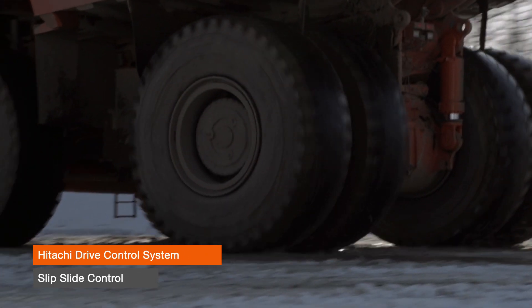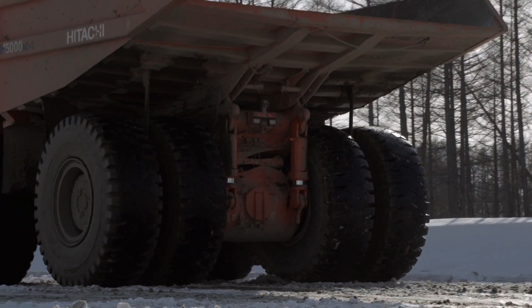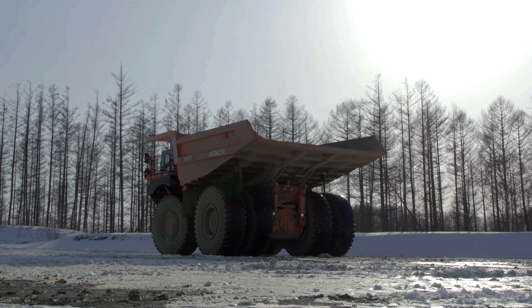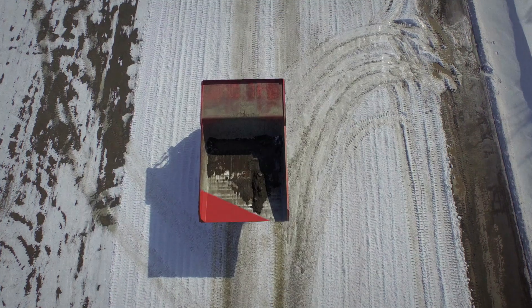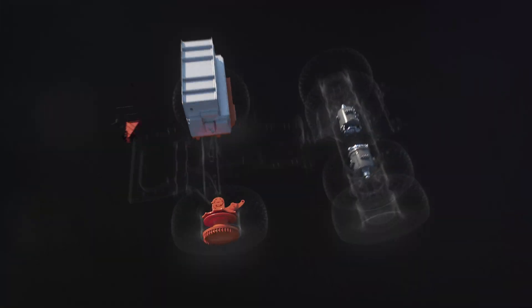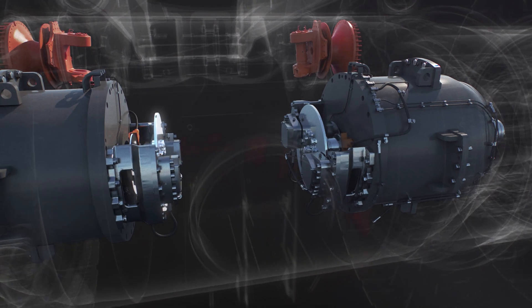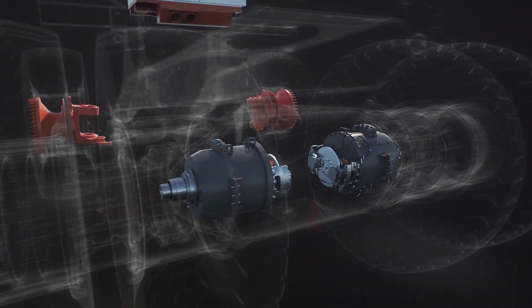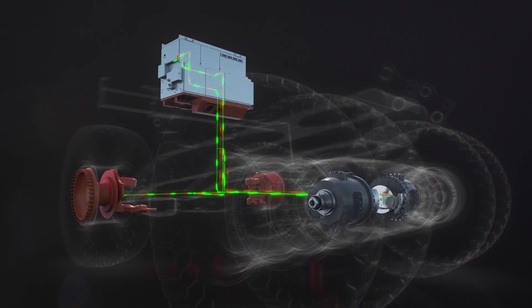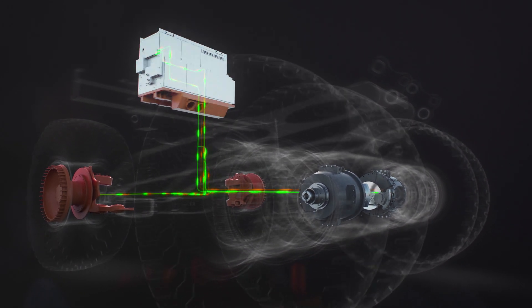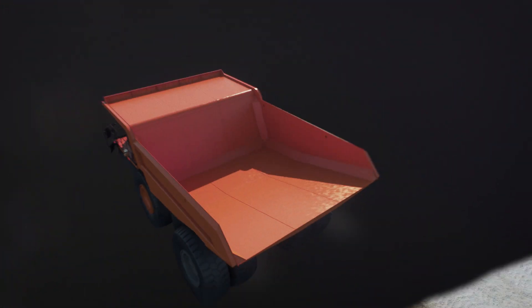Slip slide situations can occur when one side of the rear tires loses traction and starts to spin, when both tires are spinning, or when both tires are locked due to excessive rear braking force. Utilizing speed sensors located on each side of the front and rear wheels, the Hitachi drive control system determines the speed differential of the wheels. This information is transmitted to the control unit which in turn adjusts the torque to the wheel motors, assisting the truck to regain traction.